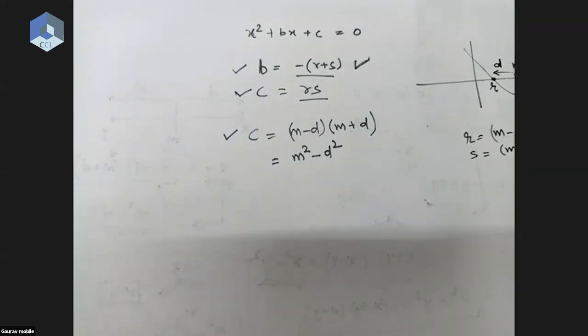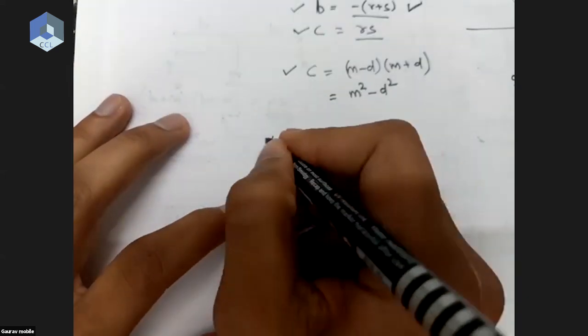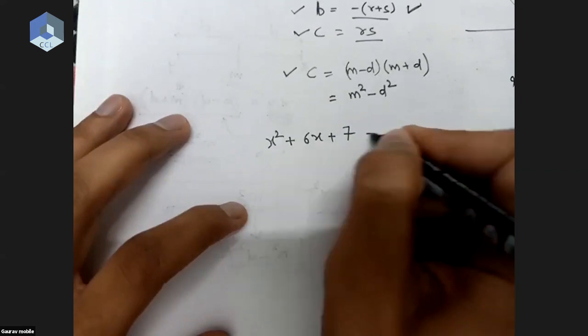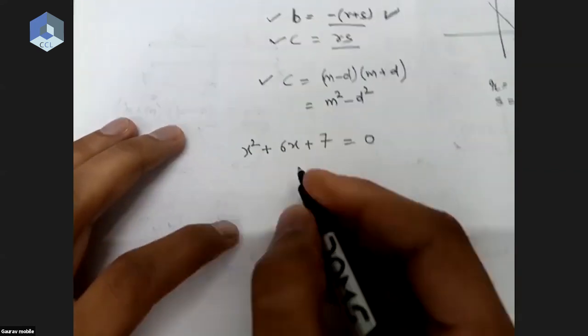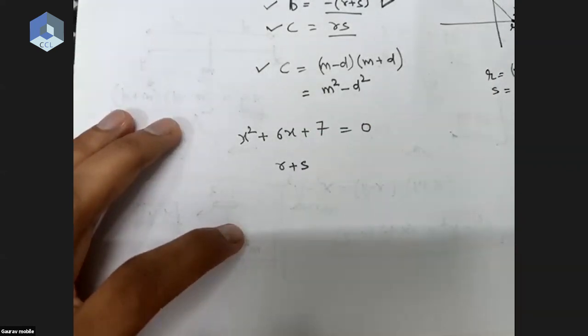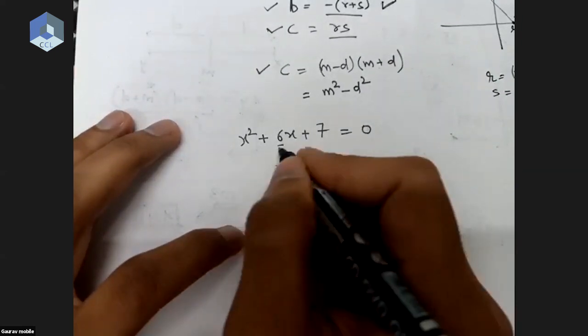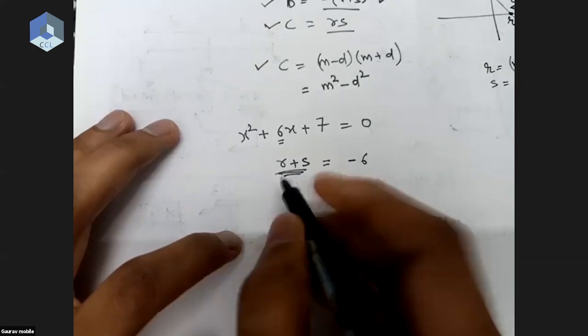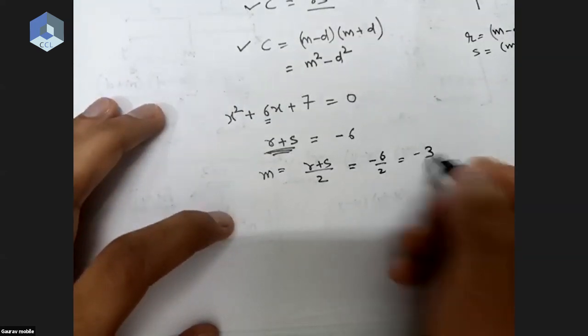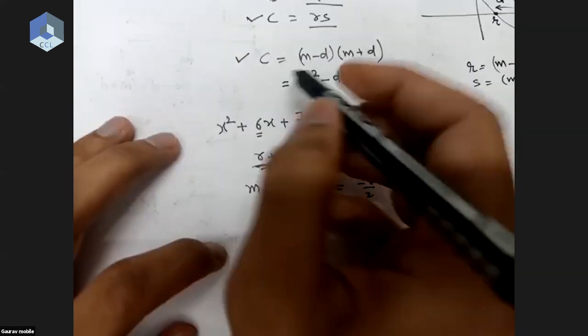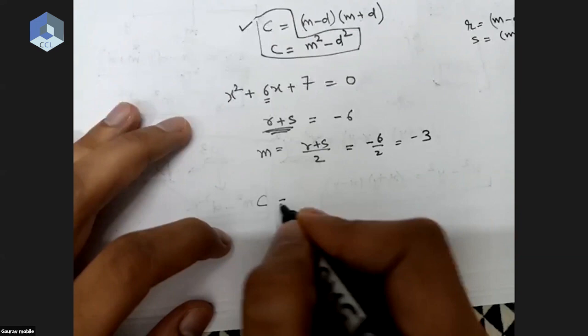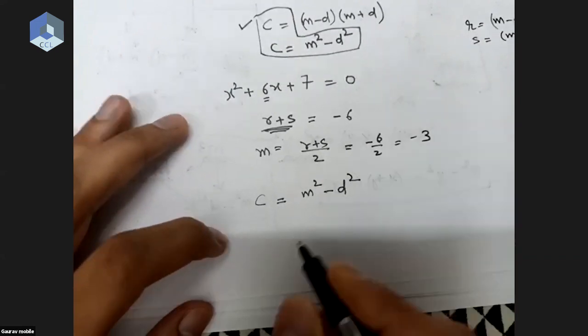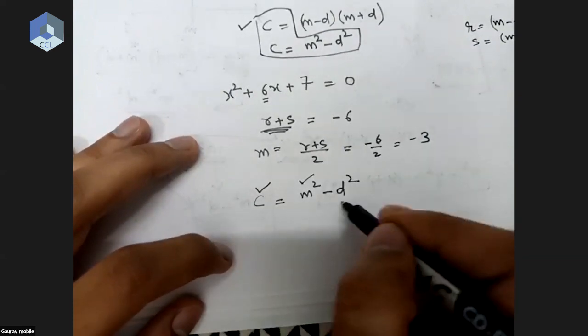Using these three things, let's solve a quadratic equation. Take this example: x square plus six x plus seven equal to zero. We know the sum of roots r plus s will be minus six. The mean, the midpoint m, will be minus six by two which is minus three. And from c equal to m square minus d square, we can now calculate d. C is seven, so d equals square root of m squared minus seven.